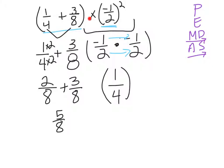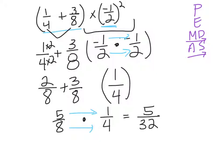I'm still multiplying these two parentheses together, so I bring down my multiplication symbol and my second parentheses. Remember, when we multiply fractions, we multiply straight across. So my numerator is going to be 5, and my denominator is going to be 32. I can't reduce that, so 5 thirty-seconds is going to be my final answer.